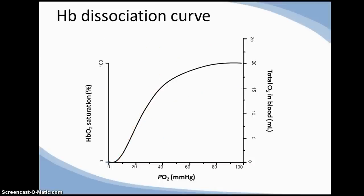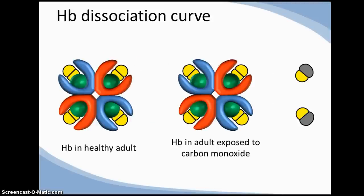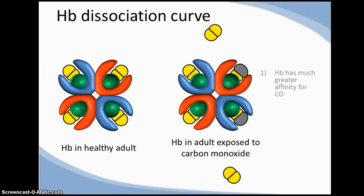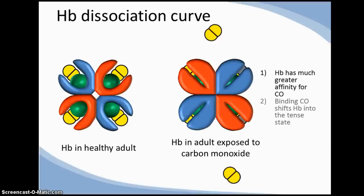Finally, in carbon monoxide poisoning, there's a downwards and leftwards shift. This is because haemoglobin has a much greater affinity for carbon monoxide, about 200 times, and when it binds carbon monoxide, it pushes haemoglobin into the tense state, making it much harder to reversibly bind oxygen.